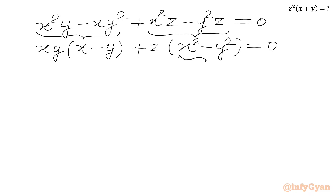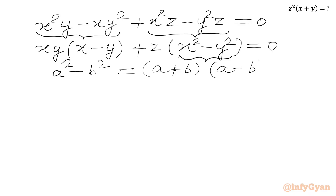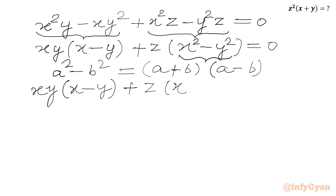Now we apply the difference of two squares formula: a squared minus b squared equals a plus b times a minus b. So we write xy times x minus y plus z times x plus y times x minus y equal to 0.